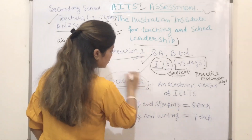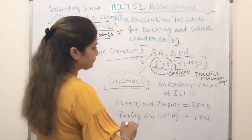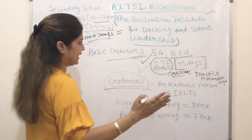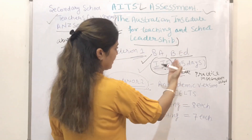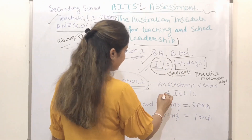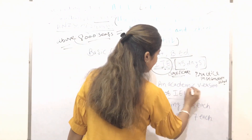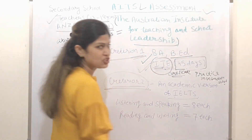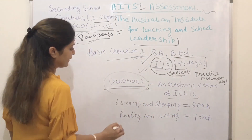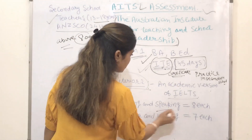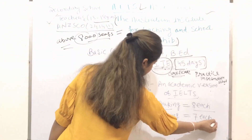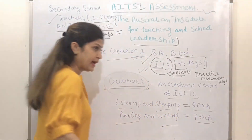Criteria 2: when you send your documents for assessment — such as your qualification — the main requirement is an Academic version of IELTS. In the Academic IELTS, you need Listening and Speaking 8 each, and Reading and Writing 7 each.